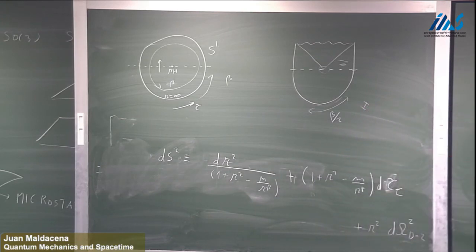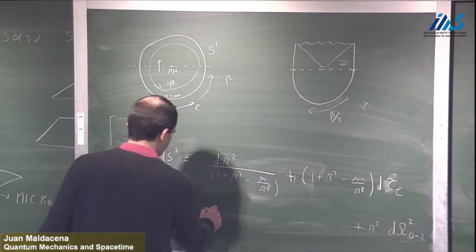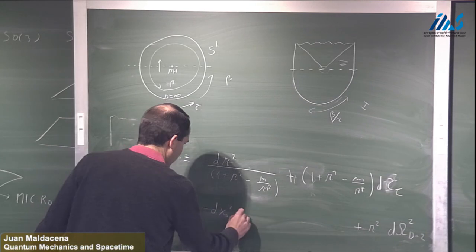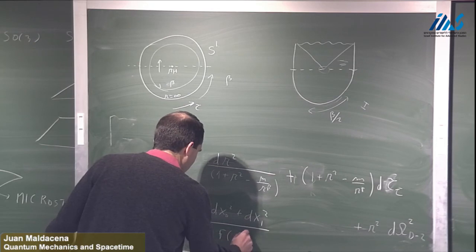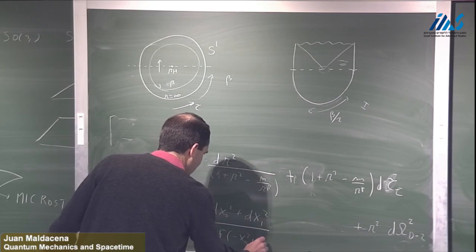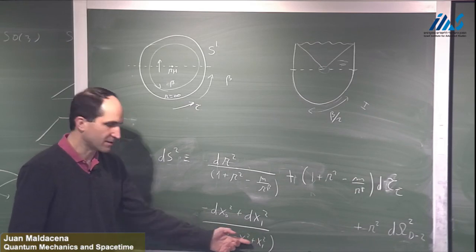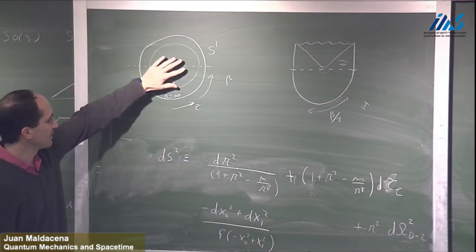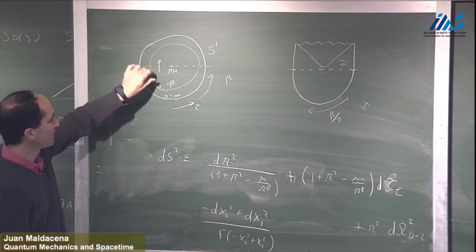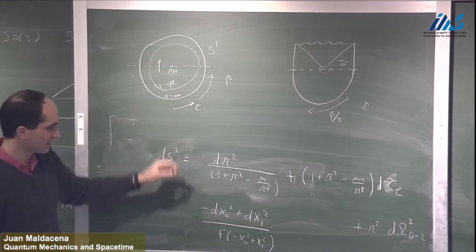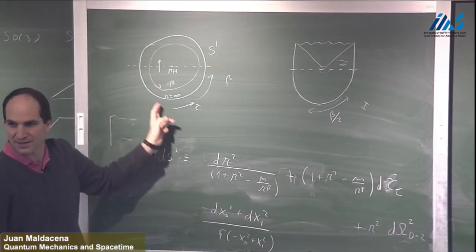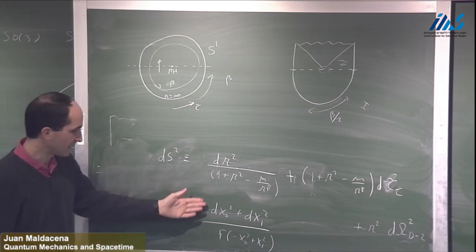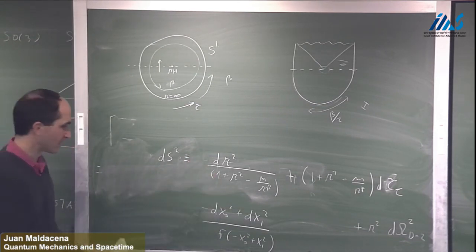The Kruskal coordinates are not mysterious. In these coordinates the metric looks like d x0 squared plus d x1 squared divided by some function of minus x0 squared plus x1 squared. This function of the radial coordinate diverges at the boundary of AdS. The analytic continuation is exactly the same as before: a plus sign gives the Euclidean solution and a minus sign gives the Lorentzian solution.